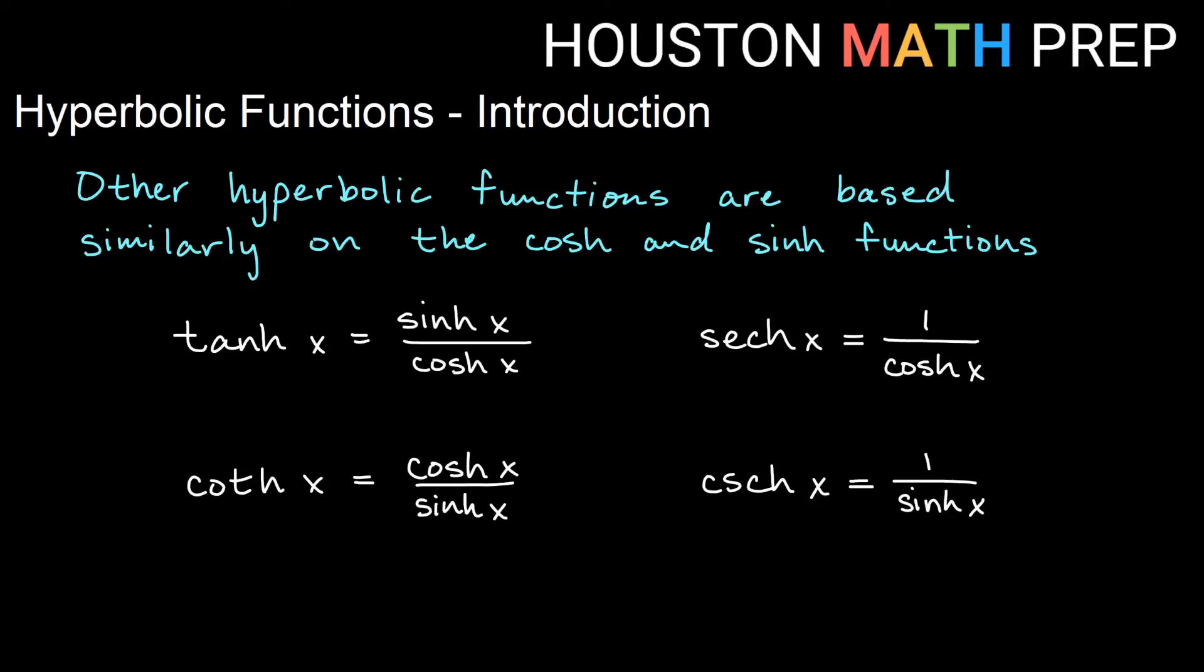Just like with the circular functions from trigonometry, where tangent is the sine of something over the cosine of that thing, we also have other hyperbolic functions that are based on hyperbolic sine and hyperbolic cosine. So for example, hyperbolic tangent is equal to cinch of x over cosh of x. Hyperbolic cotangent of x is equal to the cosh of x over cinch of x. Hyperbolic secant and hyperbolic cosecant are likewise the reciprocals of cosh x and cinch x.